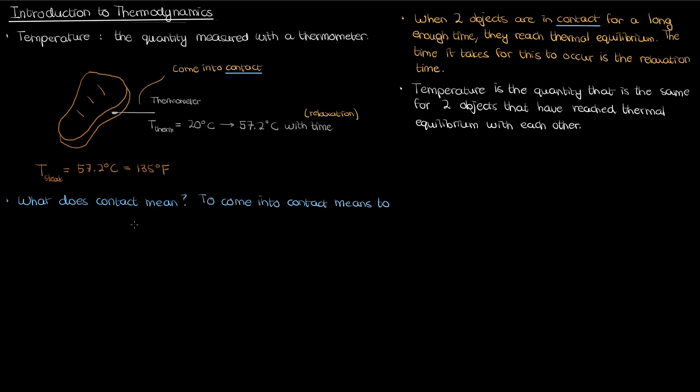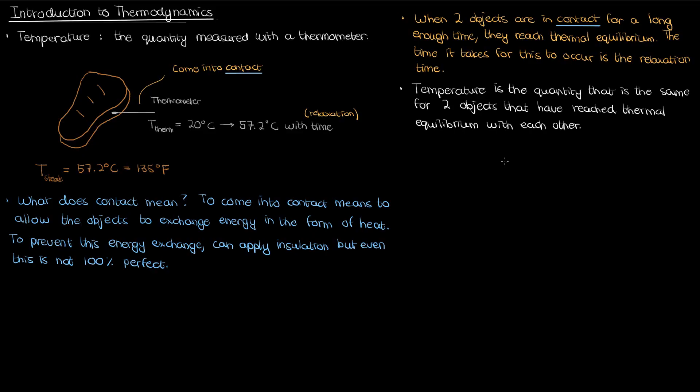Well it means that we allow those objects to exchange energy in the form of what's called heat and to prevent this exchange of energy between two objects you need to insulate those objects from each other. Granted you can never really have 100% perfect insulation. Insulation really just prolongs your relaxation time but it won't outright prevent an exchange of energy. So let's go back to our steak scenario.